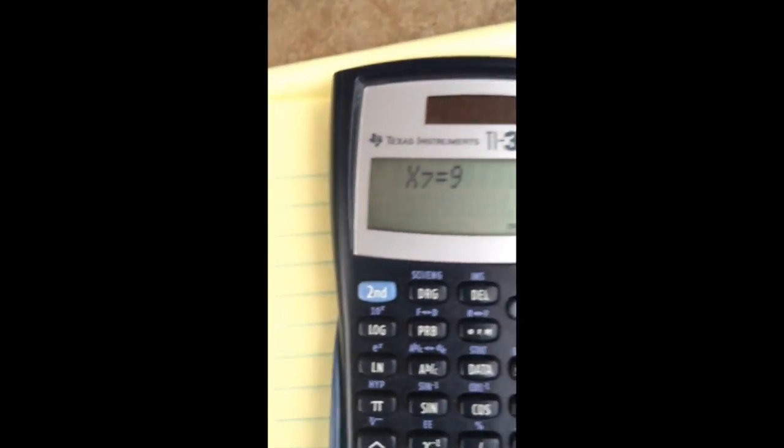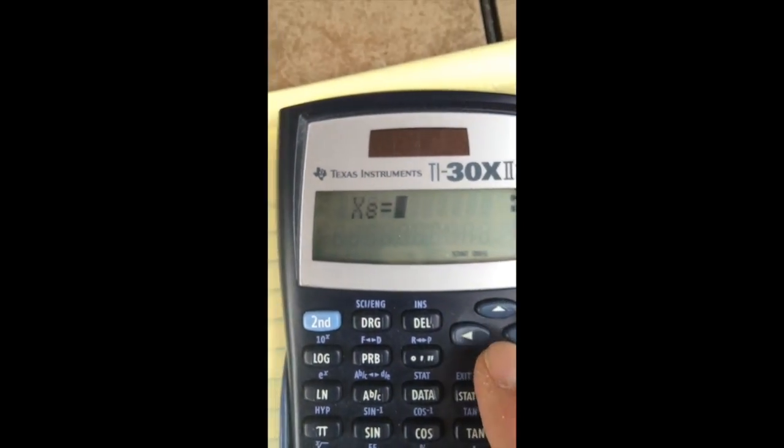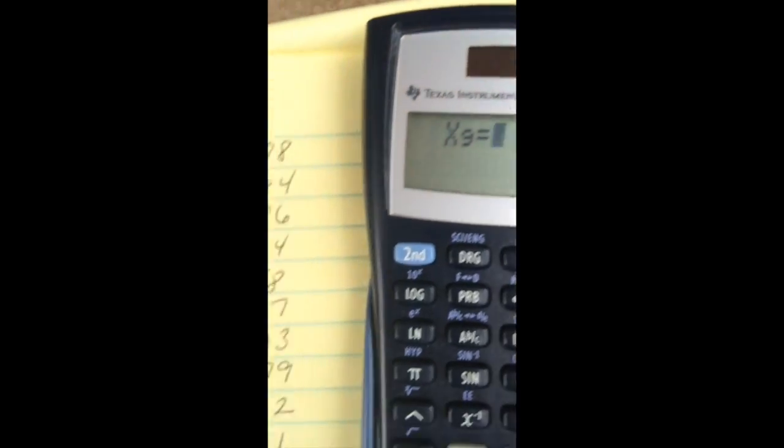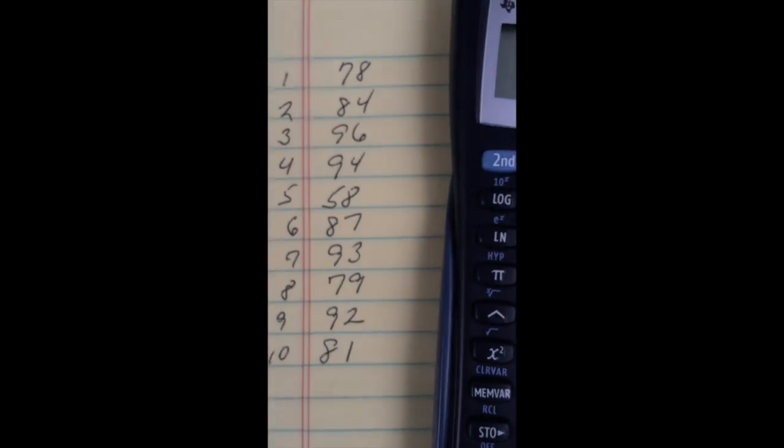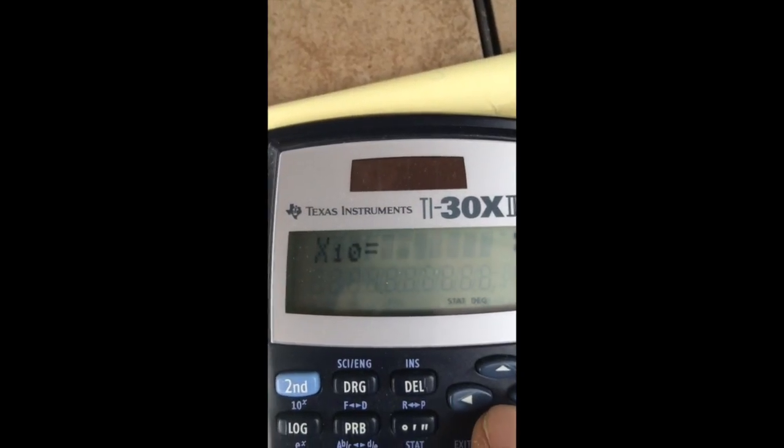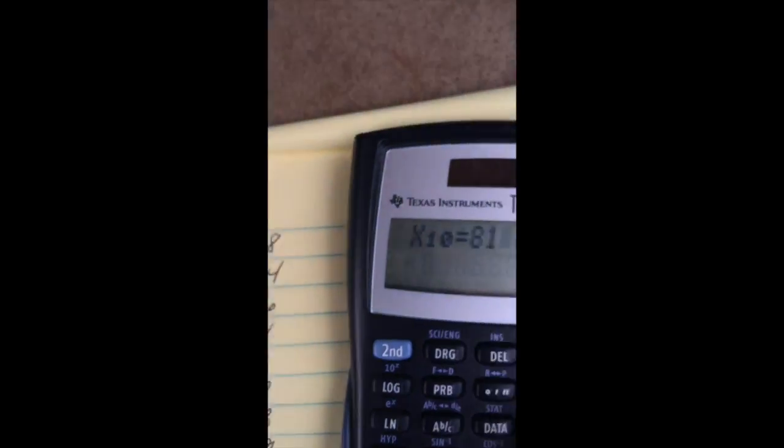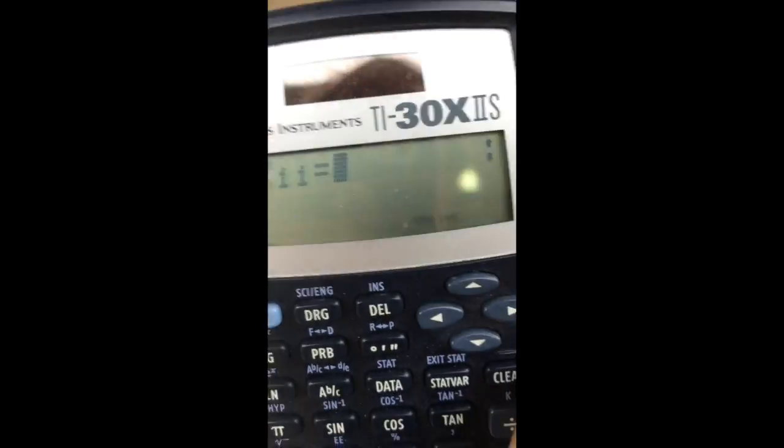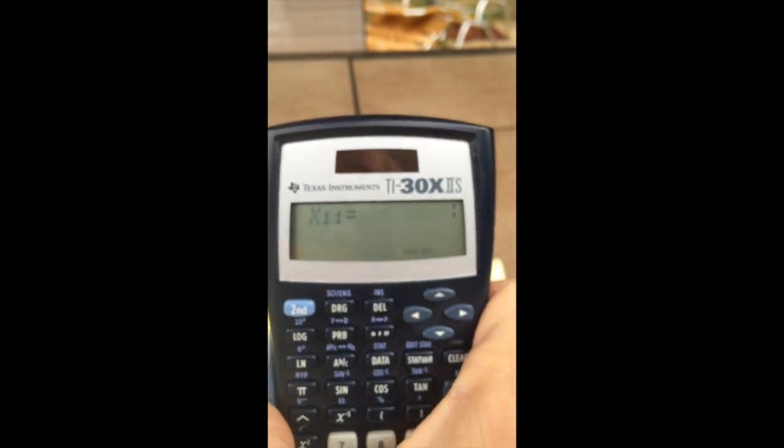The sixth is 87, down arrow. The seventh is 93, down arrow. The eighth is 79, down arrow. The ninth is 92, down arrow. And the tenth is 81, down arrow.